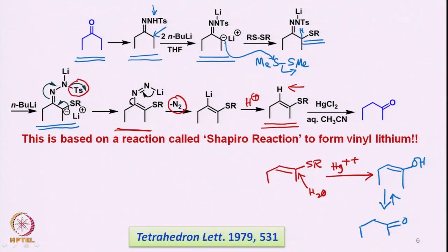So you can start with one ketone, make the corresponding tosyl hydrazone, then treat with butyl lithium to introduce a sulfur at the vinyl position, and once that has happened you can hydrolyze it with Hg²⁺ in aqueous acetonitrile medium to hydrolyze the vinyl sulfide to the corresponding ketone. This is one of the earlier methods, and it is based on a reaction called the Shapiro reaction, which forms vinyl lithium.